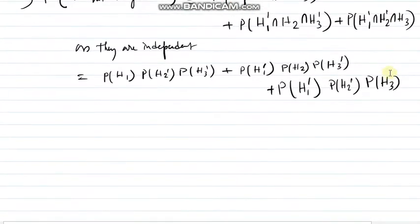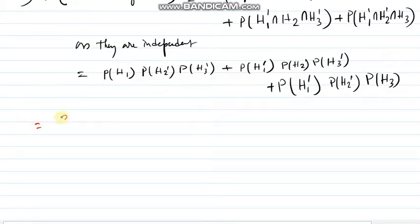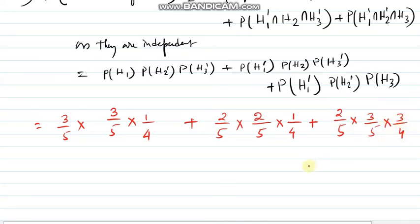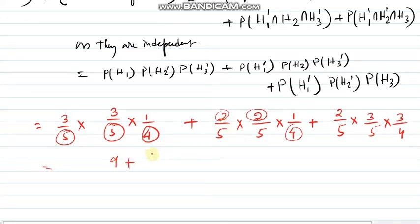So now putting the values: P(H1) is 3/5, P(H2c) is 3/5, P(H3c) is 1/4. Then P(H1c) is 2/5, P(H2) is 2/5, P(H3c) is 1/4. Then P(H1c) is 2/5, P(H2c) is 3/5, P(H3) is 3/4. Don't cancel out the 2 and 4 because you still have to take the same LCM. The LCM is 100, giving 9 + 4 + 9 = 22... wait, that gives 18 divided by 100 — the answer is 31 divided by 100.